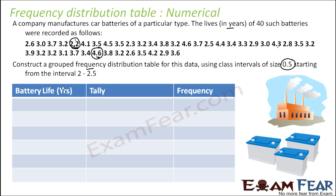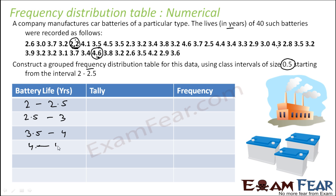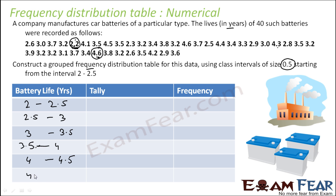The initial class starts at 2. So we will have: 2 to 2.5, 2.5 to 3. There was a mistake — I should start from 3 to 3.5. Let me correct it: 3 to 3.5, 3.5 to 4, 4 to 4.5, then 4.5 to 5. These are the classes. Since the maximum is 4.6, the class up to 5 is sufficient.